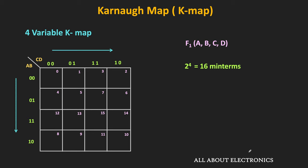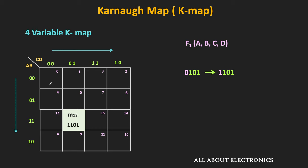Now let us see the arrangement of these cells in the kmap. The numbering beside each row and column is done in grey code form, so that the pair of adjacent cells are only 1 bit apart. For example, if you go from minterm 4 to 5, then only the last bit is changing. Similarly, if you go from minterm m5 to m13, then only the MSB is changing. So between any pair of adjacent cells, only 1 bit is changing.